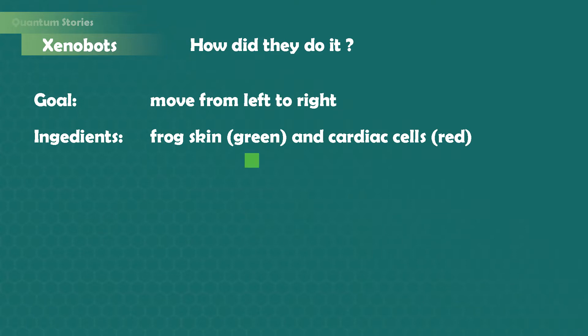Skin cells are passive, meaning they are just there for mechanical structure to hold the robot together. Cardiac cells on the other hand are special. They can contract and expand. These cells are the building block of a beating heart and this will make the robot move.